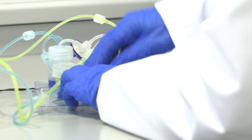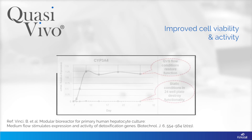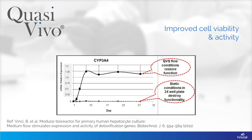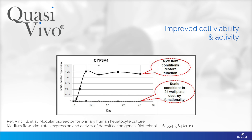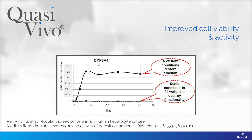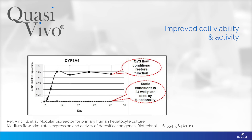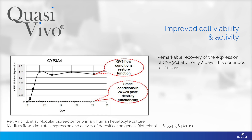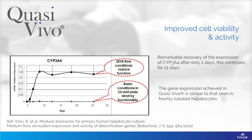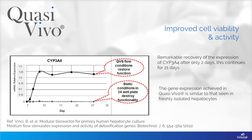Quasivivo has also demonstrated improved cell viability by up to seven times. This graph shows the gene expression of the important cytochrome P450 CYP3A4. This experiment was done using primary human hepatocytes cultured under static and flow conditions and shows gene expression relative to their expression in freshly isolated hepatocytes. In traditional static conditions, expression of this gene is almost zero. Under flow conditions, there is a remarkable recovery of the expression of CYP3A4 after only two days, and this continues for at least 21 days. The gene expression achieved in Quasivivo is similar to that seen in freshly isolated hepatocytes.